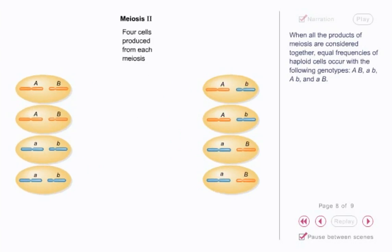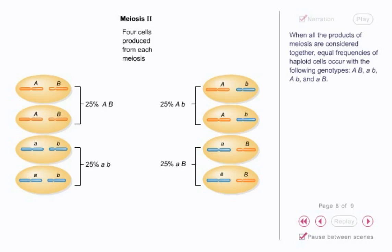When all the products of meiosis are considered together, equal frequencies of haploid cells occur with the following genotypes: big A big B, little a little b, big A little b, and little a big B.